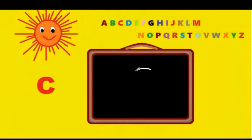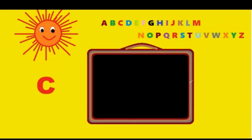See, this letter just looks like a half circle, so you just have to draw a half circle. You just have to go round the corner. C is for cat.